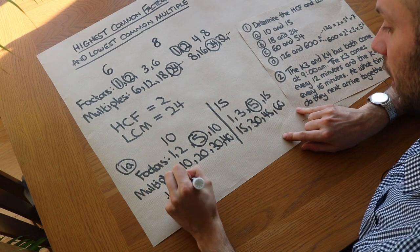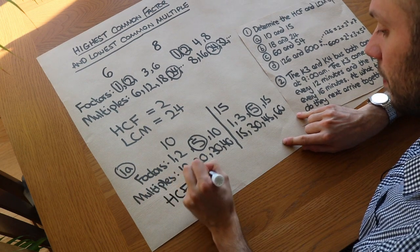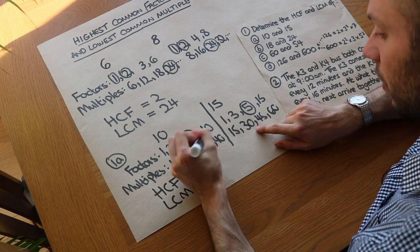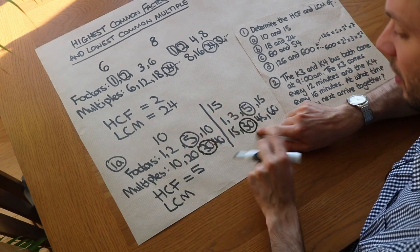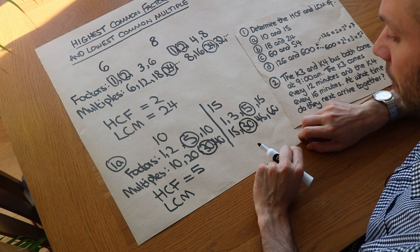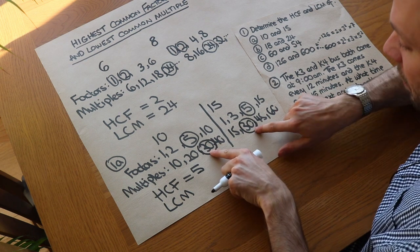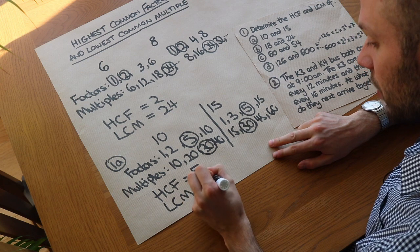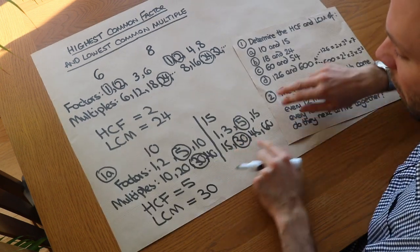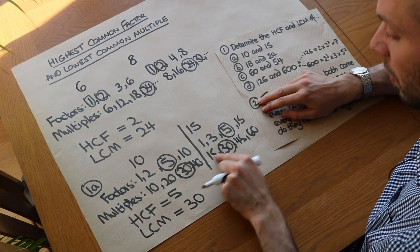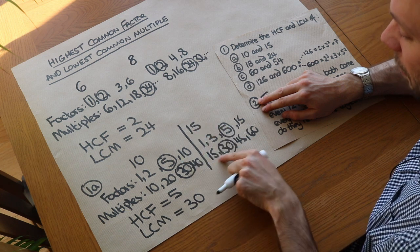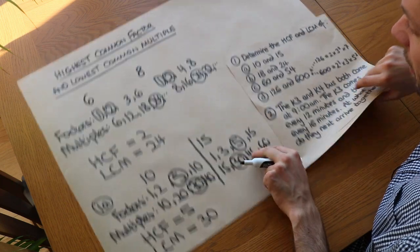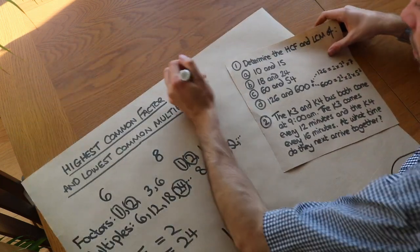So the HCF is 5. The lowest common multiple — what do they have in common? They have 30 in common, and that is the smallest common multiple. We'd also have 60 on both lists, but 30 is the smallest. I tend to just list the multiples of the larger number — in this case 15 — until I see a multiple of the smaller number. I'll illustrate that with the next example.